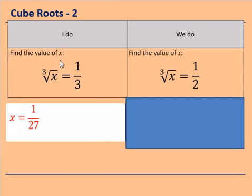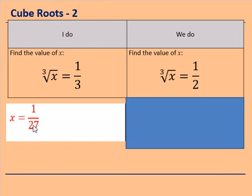For this one, find the value of x where cube root of x equals one third. If we do the opposite and cube one third: cube the numerator — 1 times 1 times 1 equals 1 — and cube the denominator — 3 times 3 times 3 equals 27 — giving x equals 1 over 27. Do the same for the We Do: cube one half. So 1 times 1 times 1 goes on top, and 2 times 2 times 2 goes on the bottom. Try that question now.